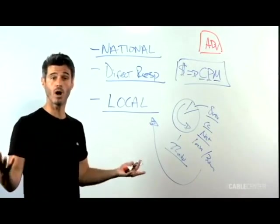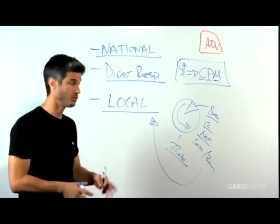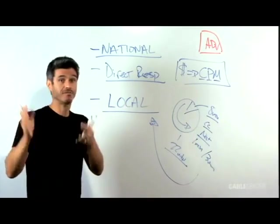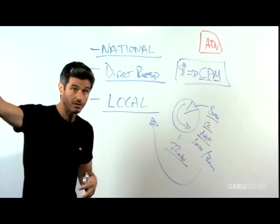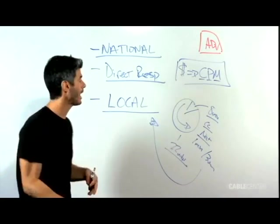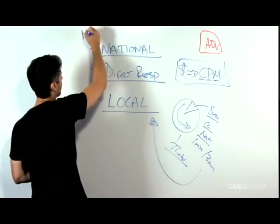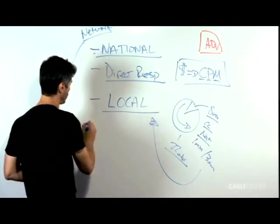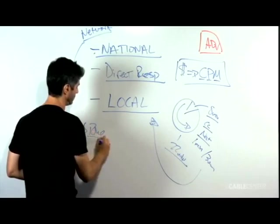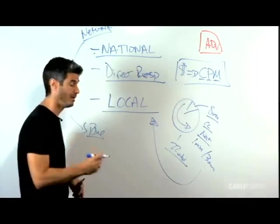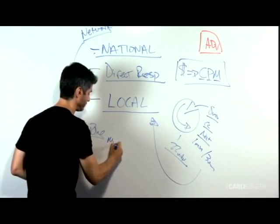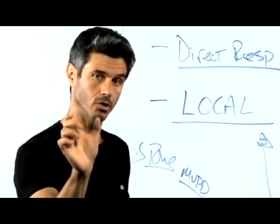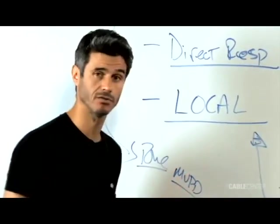So about one minute per every half hour will be given back to the MVPD to sell on a local basis. That's why when you're watching Colbert Report, you'll see a national commercial for a car company, and then it will be followed by a commercial for Pete's Pizza, which is right down the street from you. What happens is the national programmer, the network, sends what's called a tone to the MVPD's local affiliate. And that tells the local affiliate that it's time to put in your local commercial.